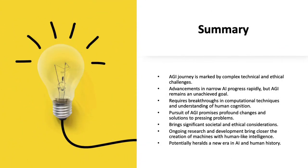In summary, the path to AGI is strewn with intricate technical hurdles and ethical dilemmas. While narrow AI has seen swift achievements and advancements, AGI still eludes us, awaiting significant breakthroughs in computational methods and insights into human thought. The quest for AGI holds the promise of revolutionary transformations and solutions to critical issues, but also poses substantial social and ethical challenges. Research is continuously advancing us towards the milestone of creating machines that can mimic human intelligence, potentially ushering in a groundbreaking epoch in both AI and human history.